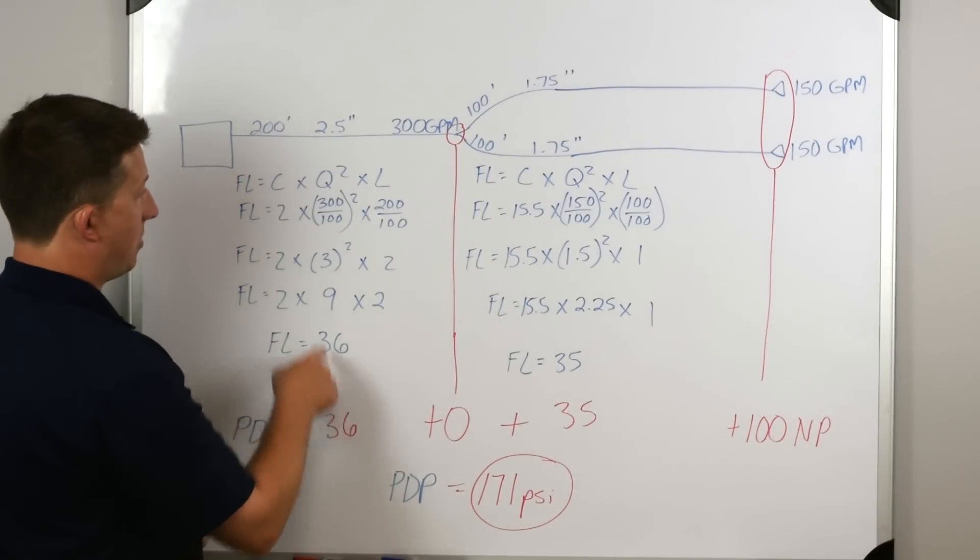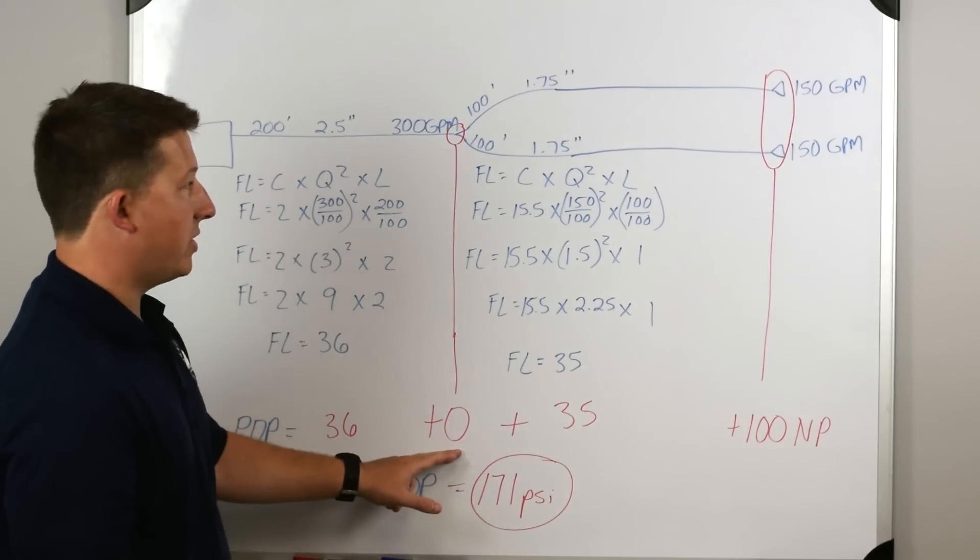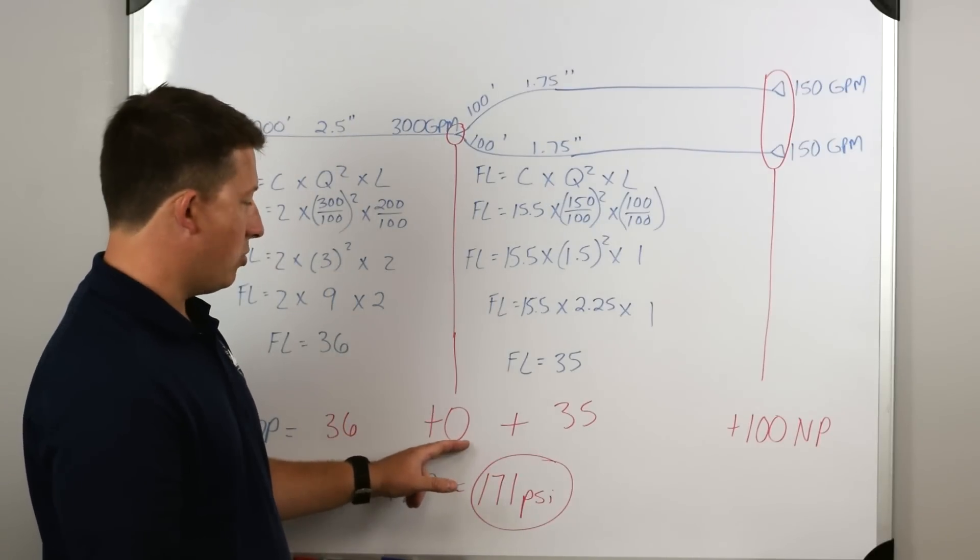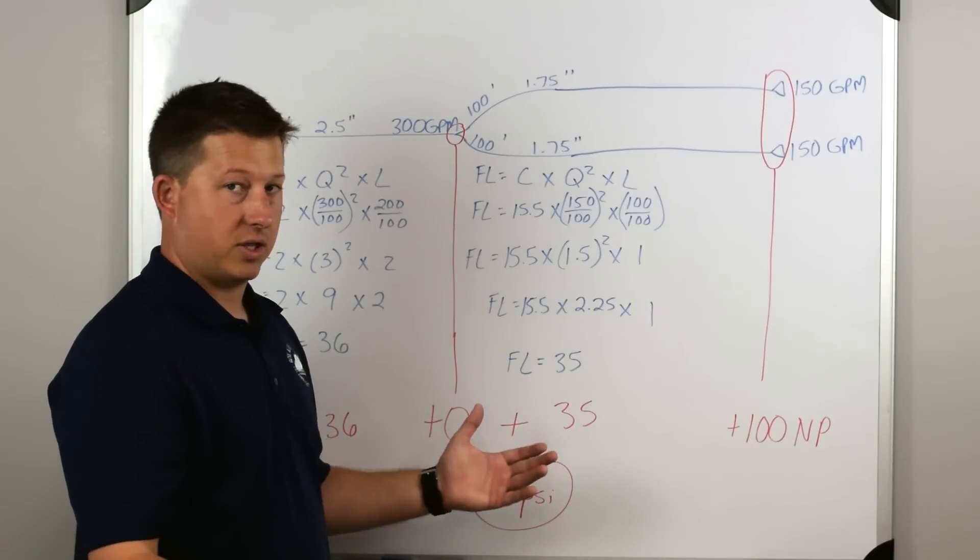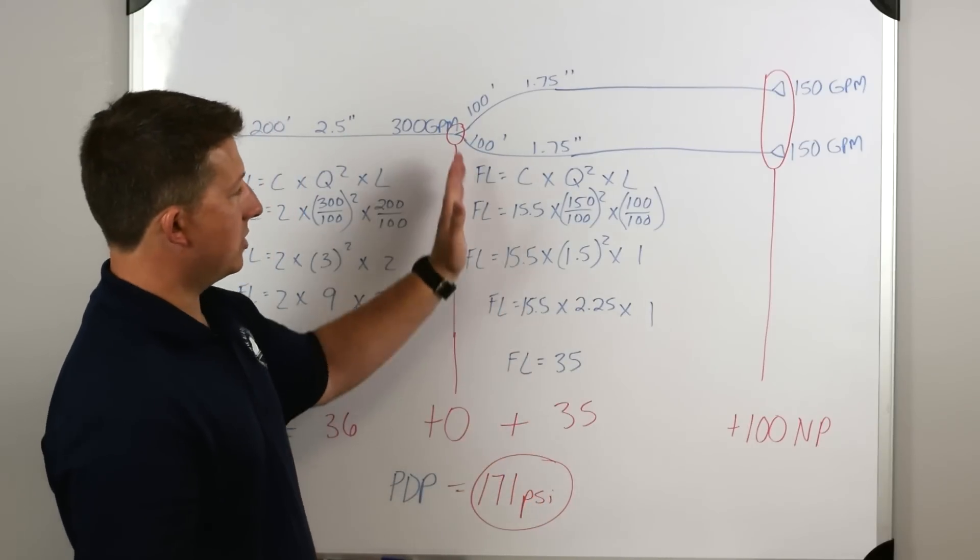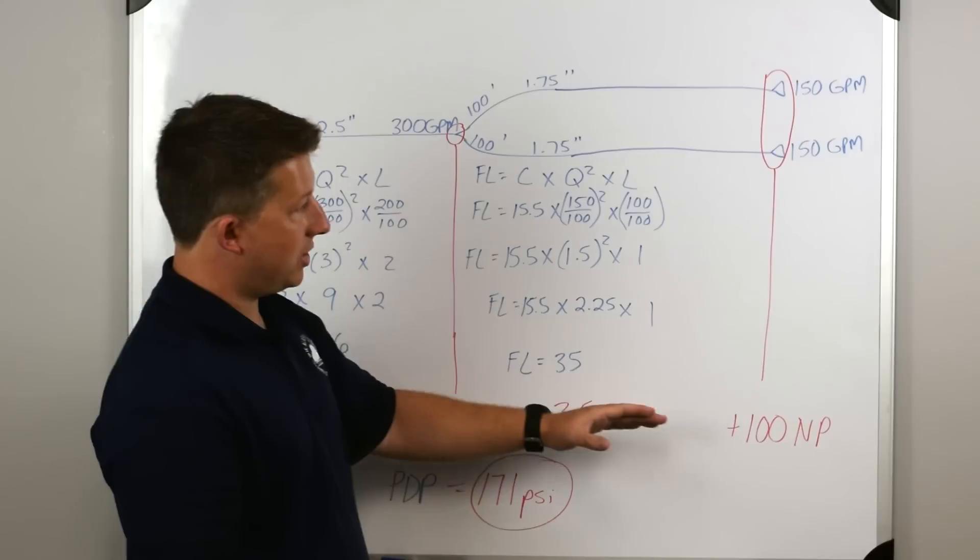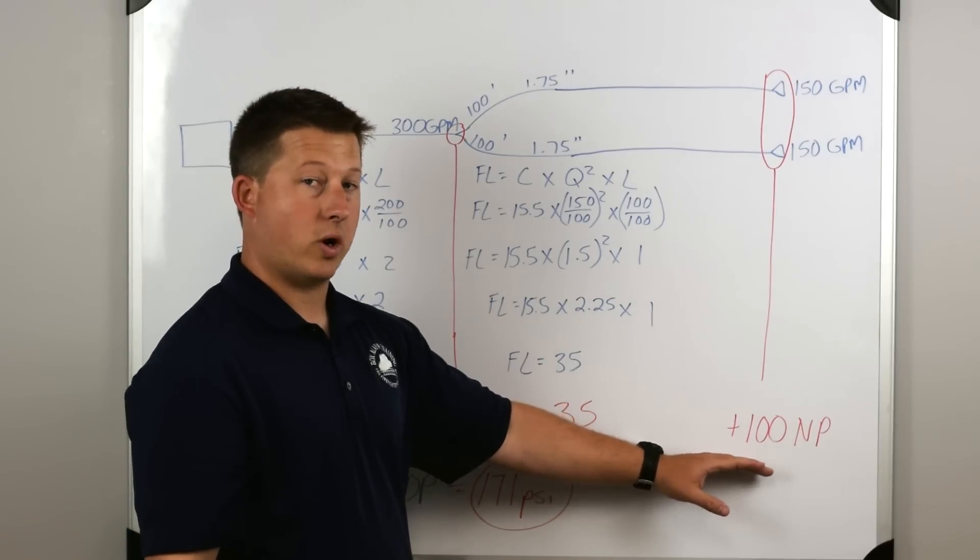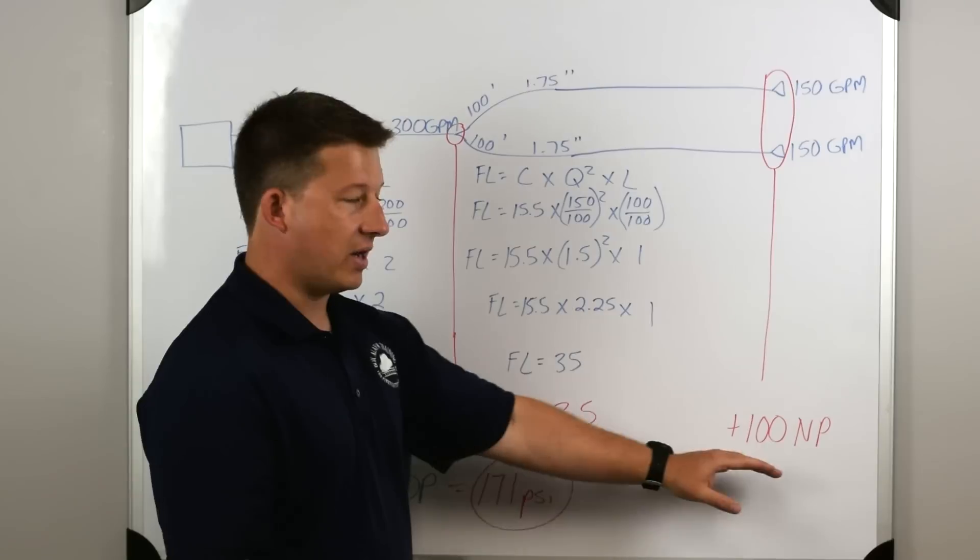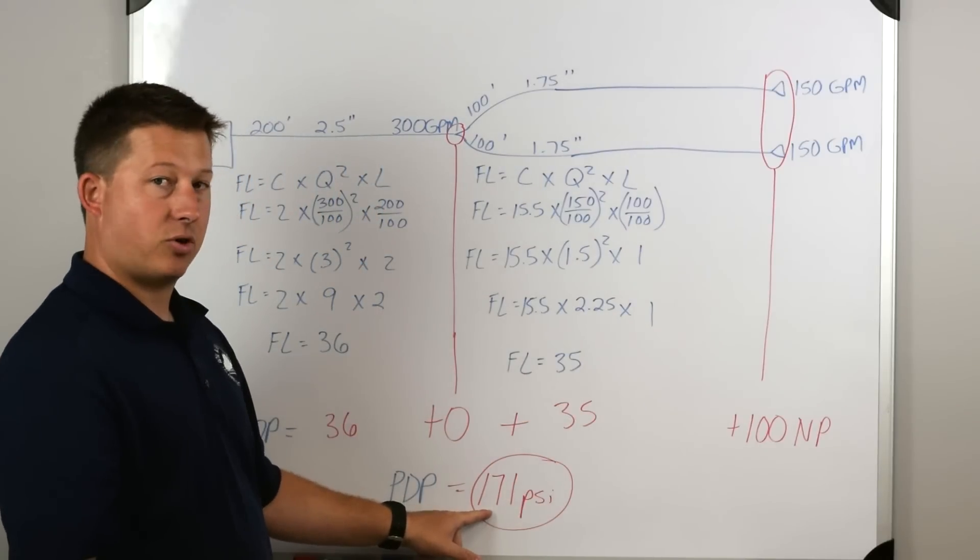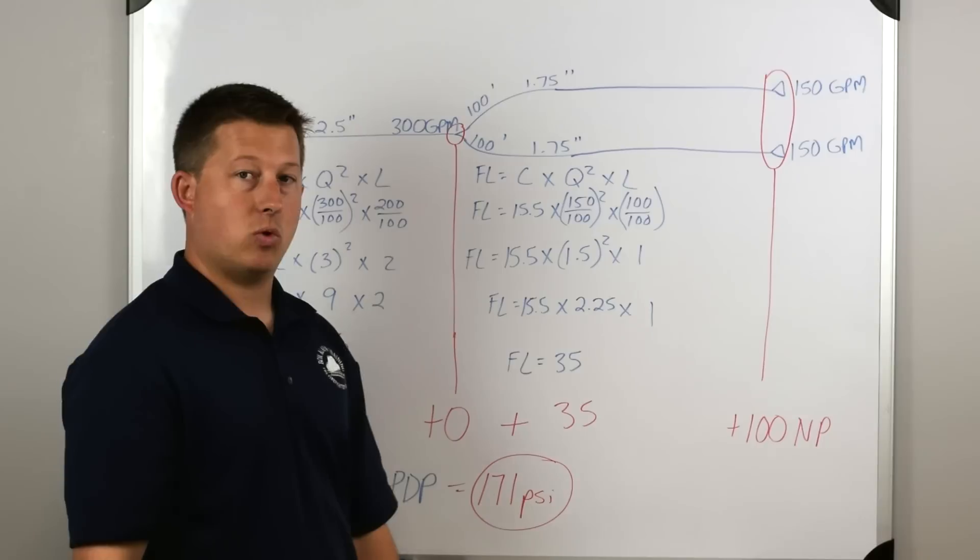So our nozzle pressure was 100 because we were using fog nozzles. That's something we have to add. Working left to right, we have our friction loss from our first hose that we laid out, 36, plus we didn't have to add anything for our Y, zero. We also didn't have to add anything for elevation gain or loss. That wasn't in this problem. We go to the next section. The hose that's here from the Y to the nozzles is 35 psi friction loss, plus the nozzle pressure, which is 100. We add all of those together - 36, 0, 35, and 100 - and it tells us that our pump discharge pressure, what we should set our pump panel to, is 171 psi.